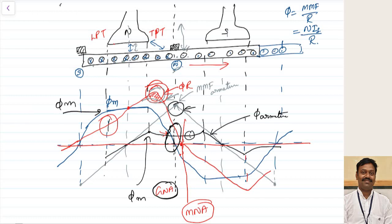The first effect is that commutation delays, causing sparking at the brushes. The second effect is that more flux is concentrated at the trailing pole tip, driving the core into saturation, so the net flux per pole decreases, reducing average EMF and torque. The third effect is that the high flux concentration induces a high voltage that may damage the mica insulation, leading to short-circuiting of commutator segments.